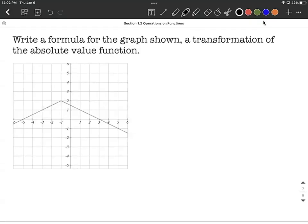We need to come up with the formula for this graph. As you can see, this is going to be the absolute value function, pretty distinct V shape going on here. It looks like this one's upside down.